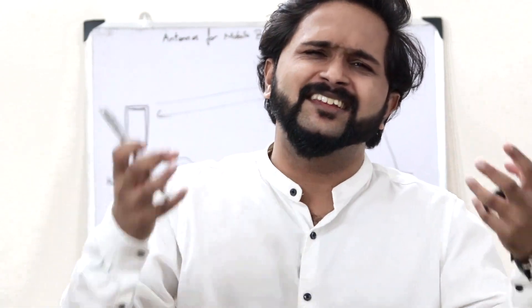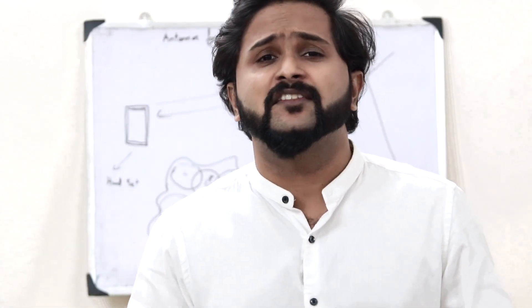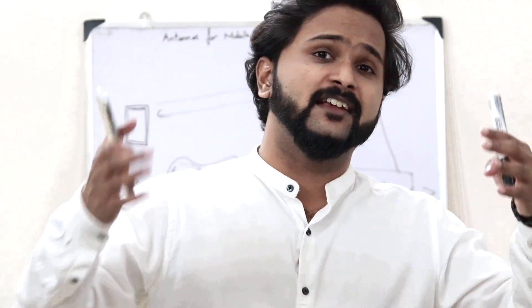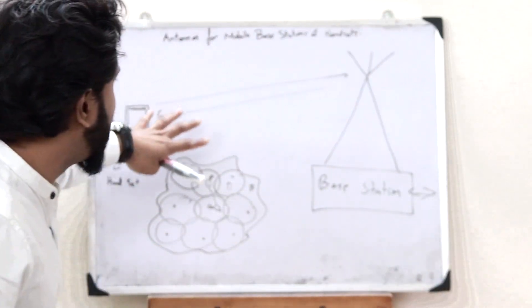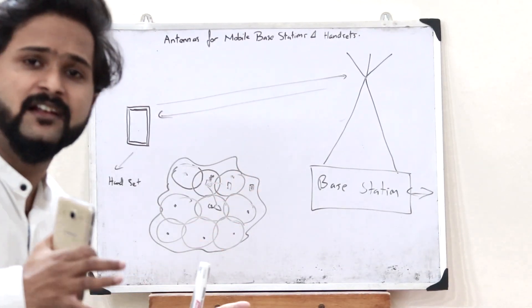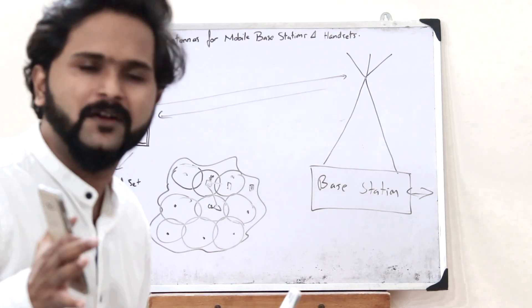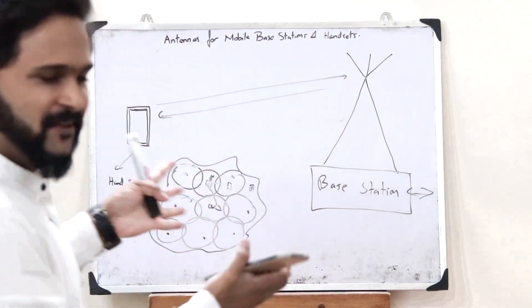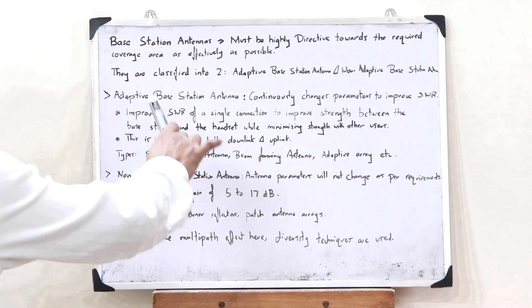This is the basic idea behind what types of antennas are used in the case of handsets and base stations, and how a typical communication system works. Now let's look at the written summary.